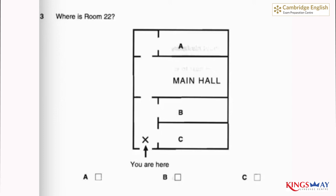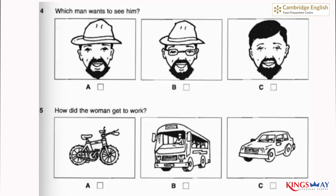Now listen again. Can you tell me the way to room 22? Well, go straight down here and it's the second door on the right. Do I have to go through the main hall? No, it's the door on the right just before you get to the main hall.